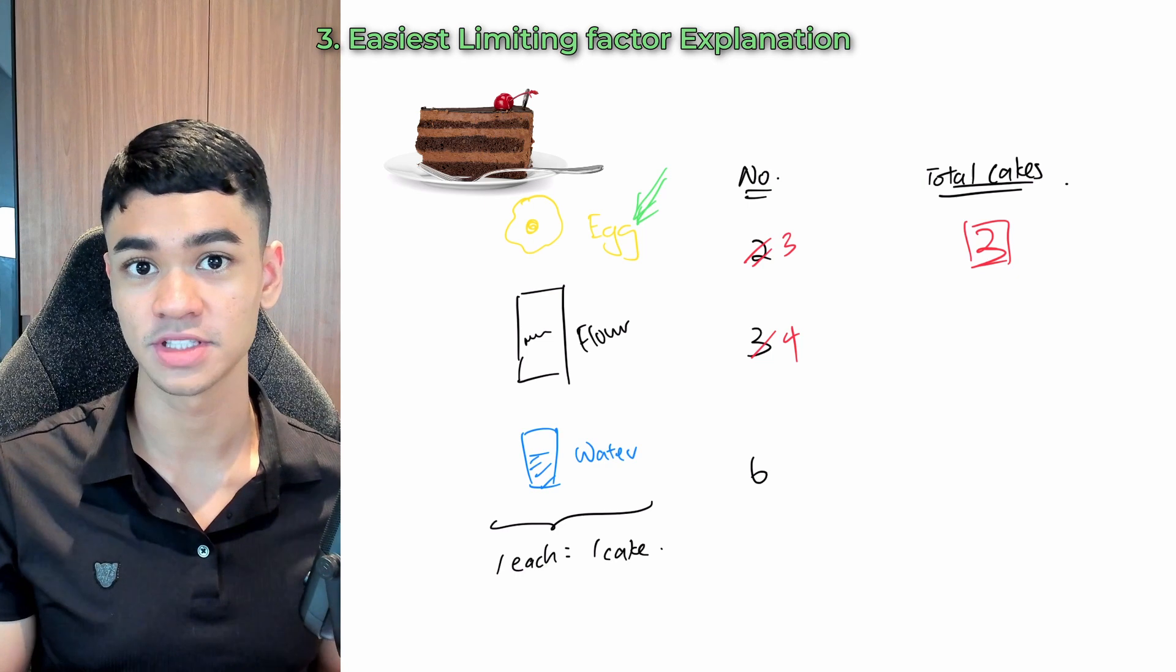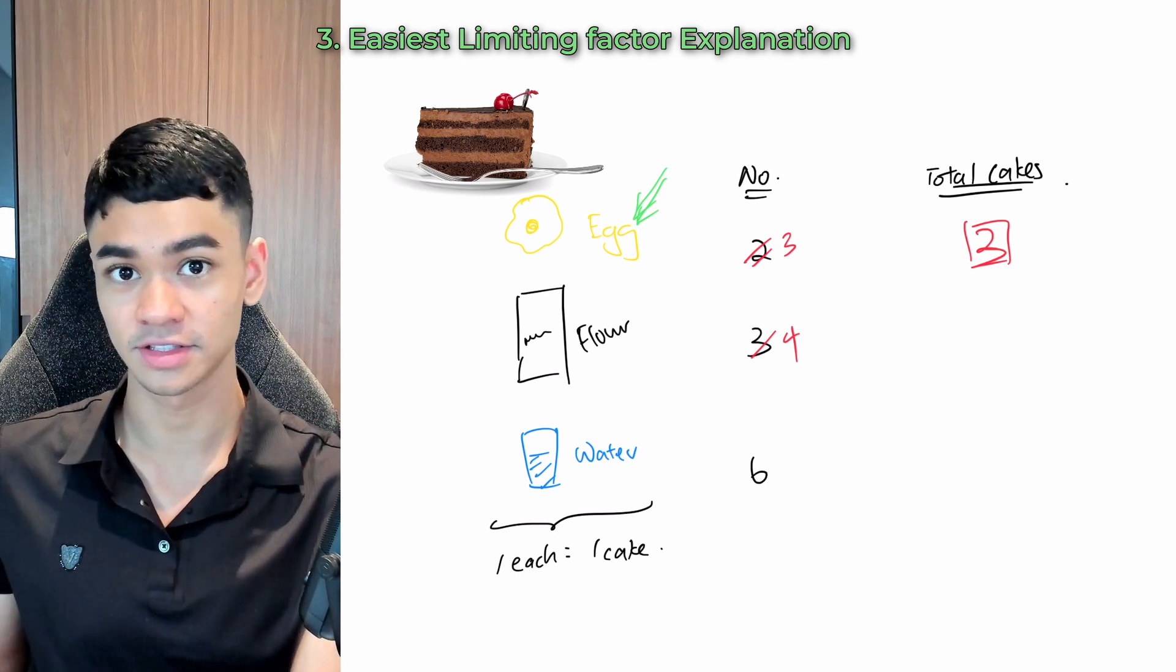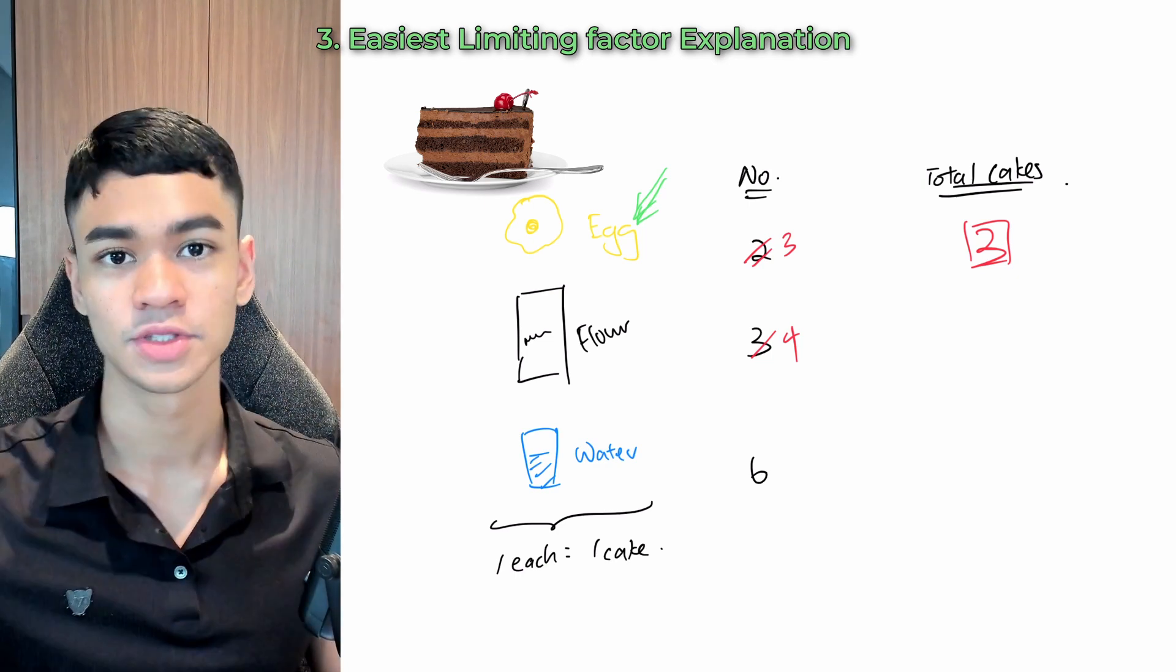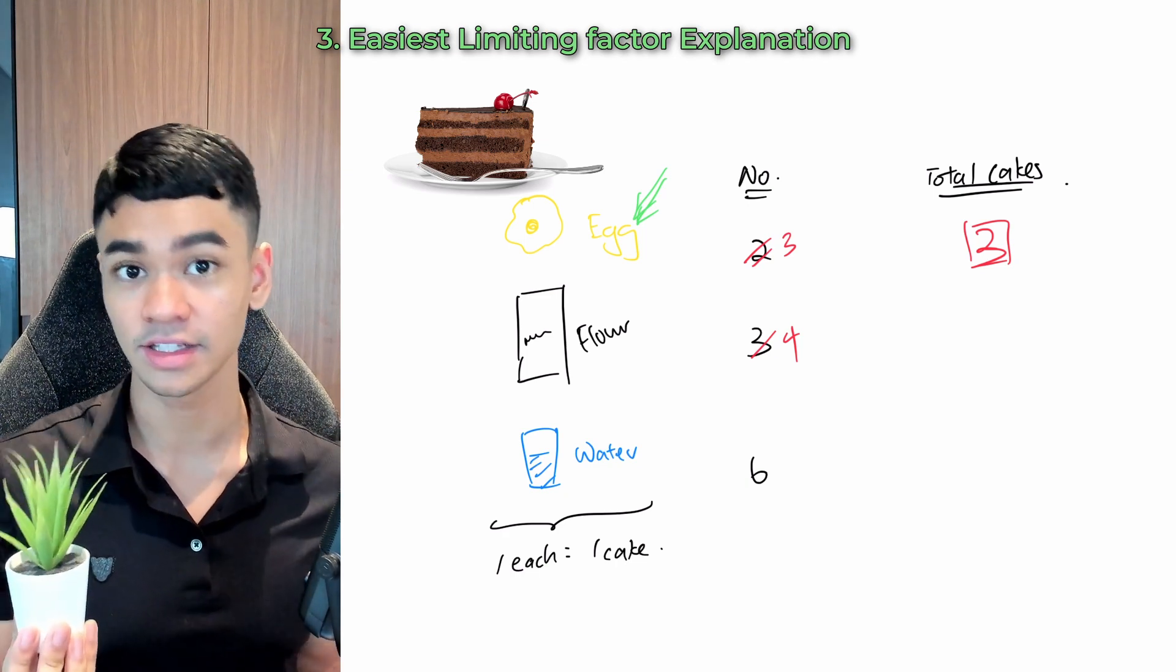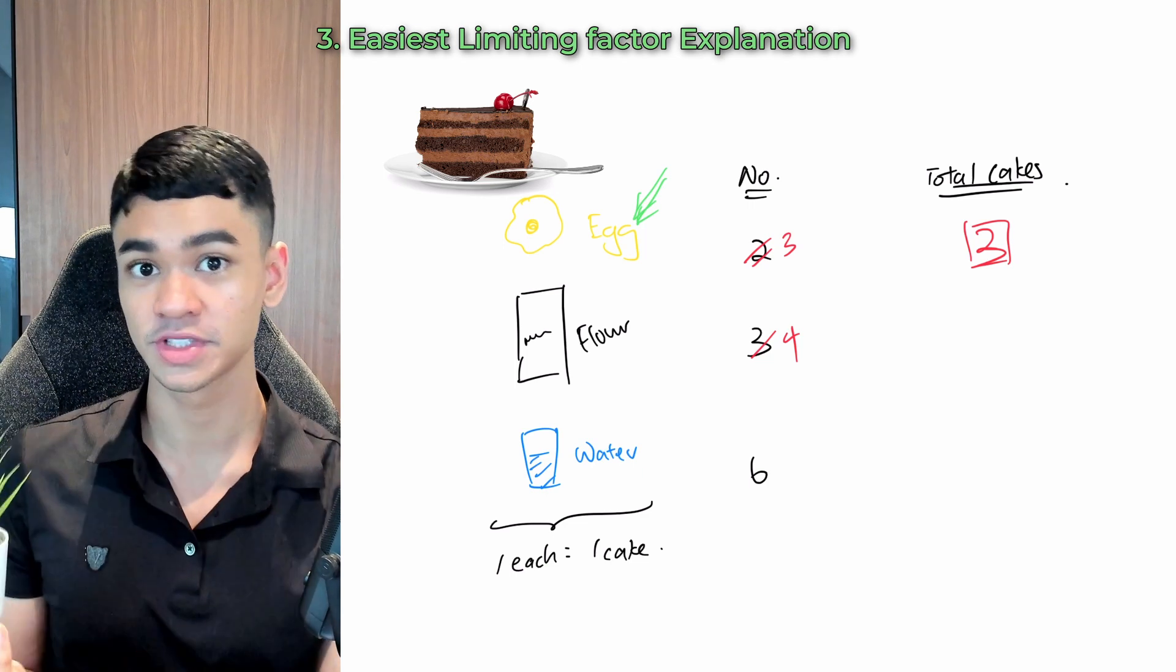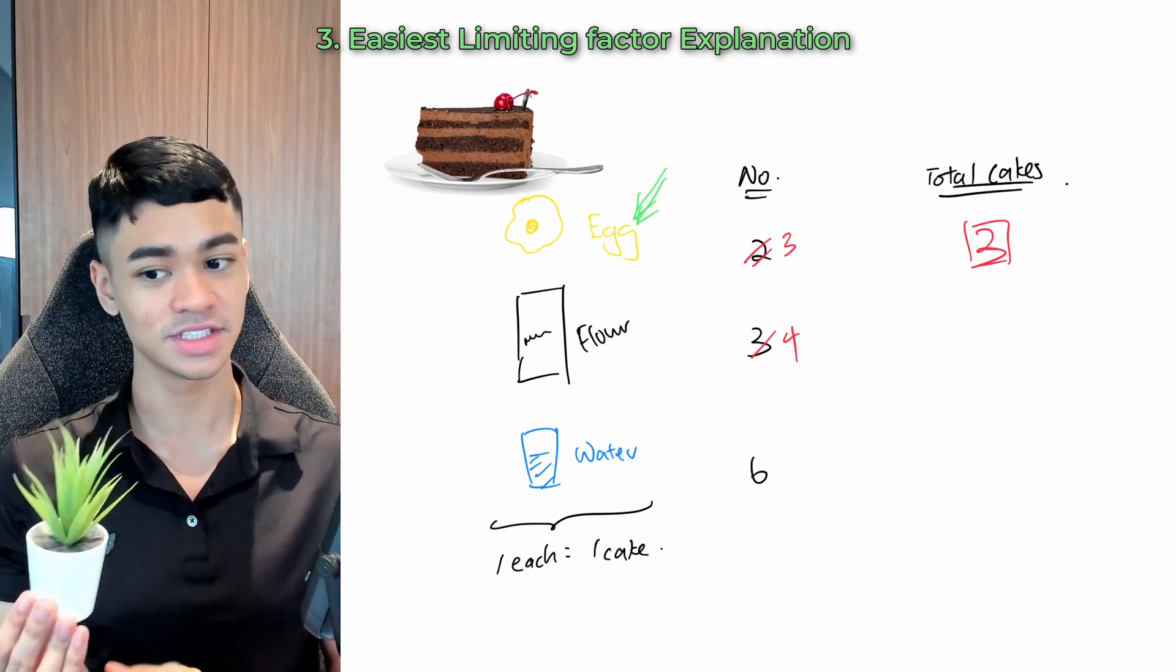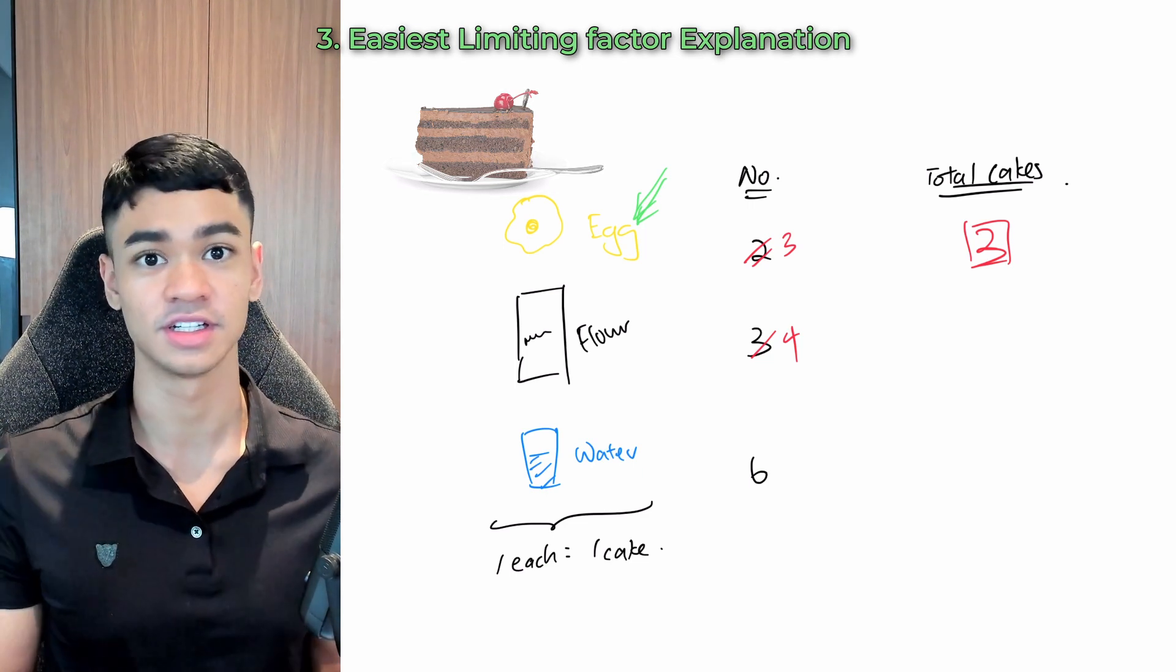So limiting factor just means if you increase that factor, you will increase the overall rate of the reaction. So example, this plant is in a very dark room. And if we increase the light intensity, if the photosynthesis goes up after that, that means light intensity was a limiting factor.